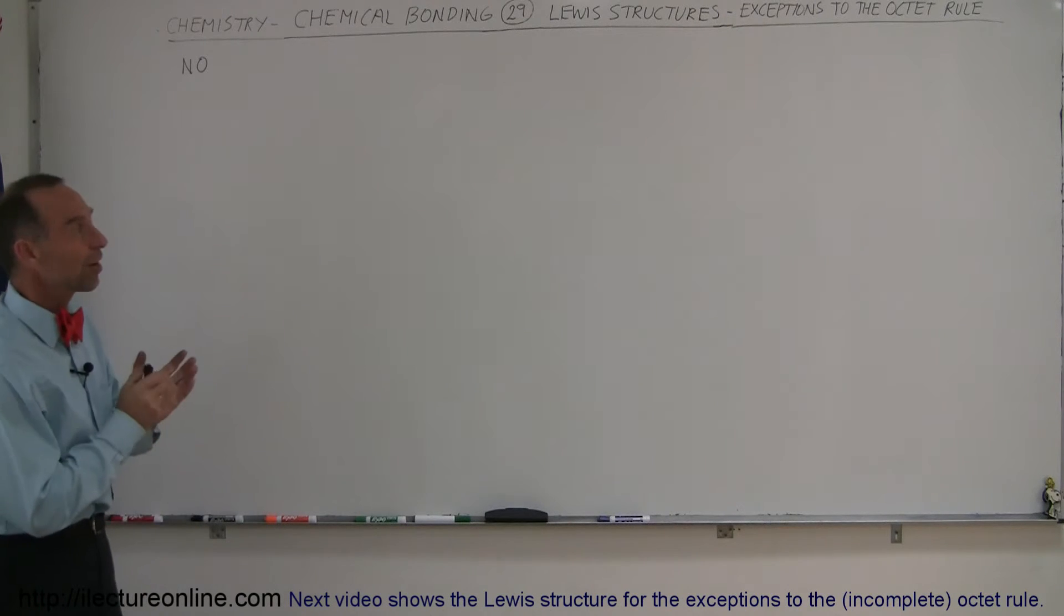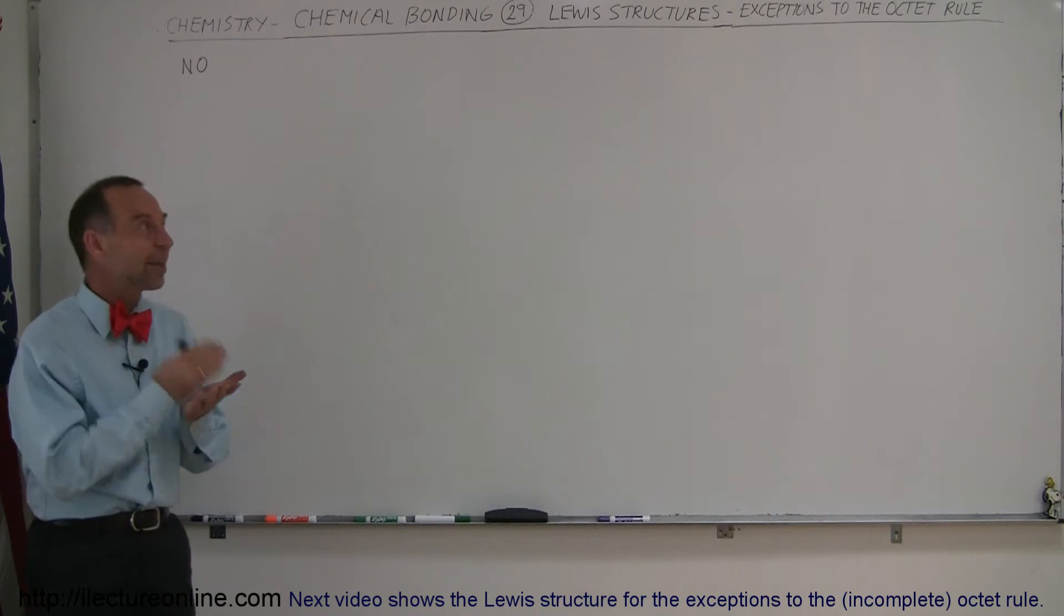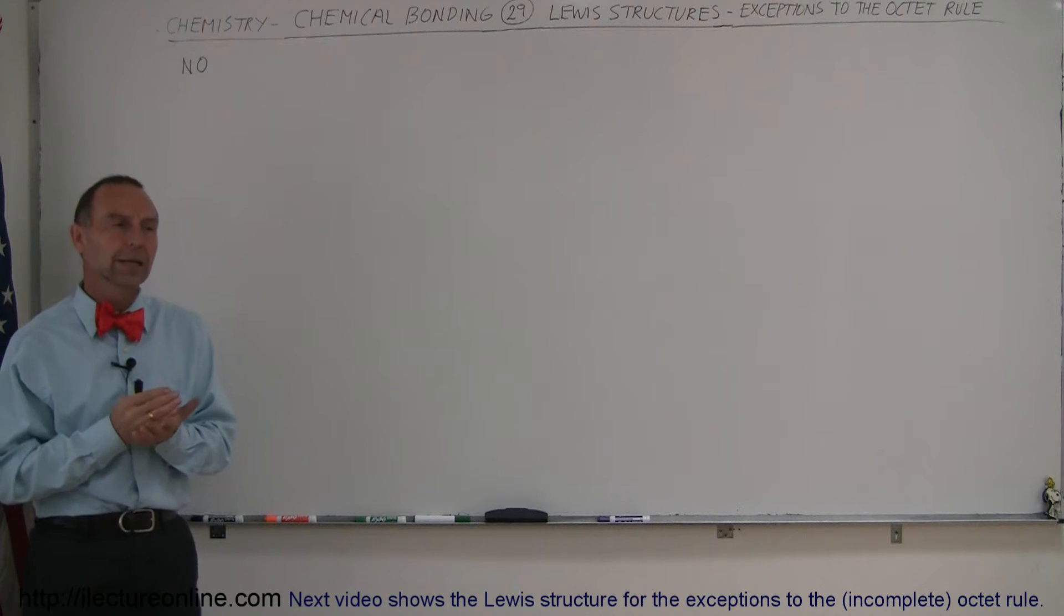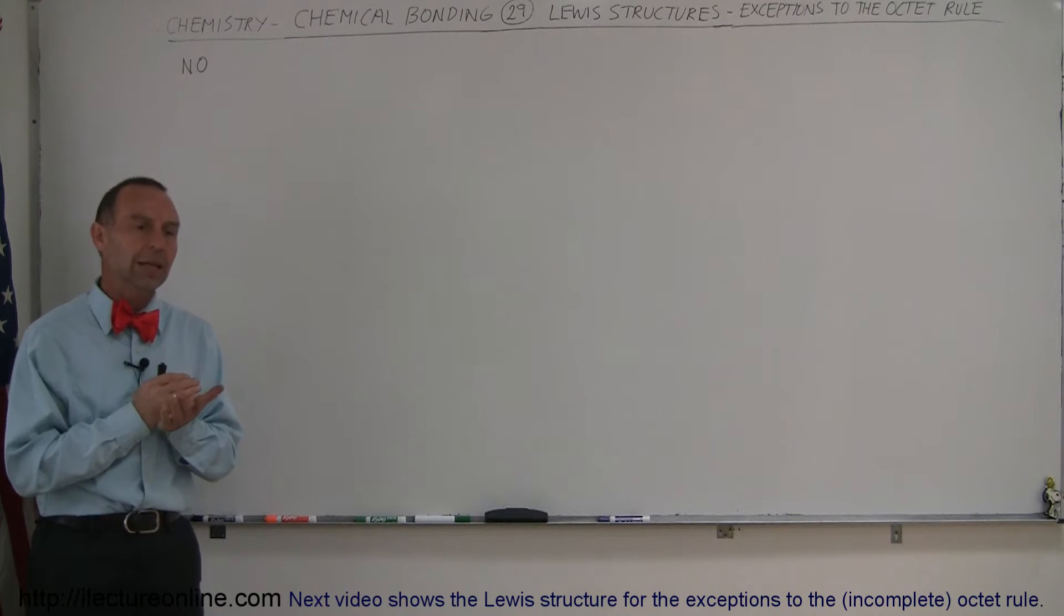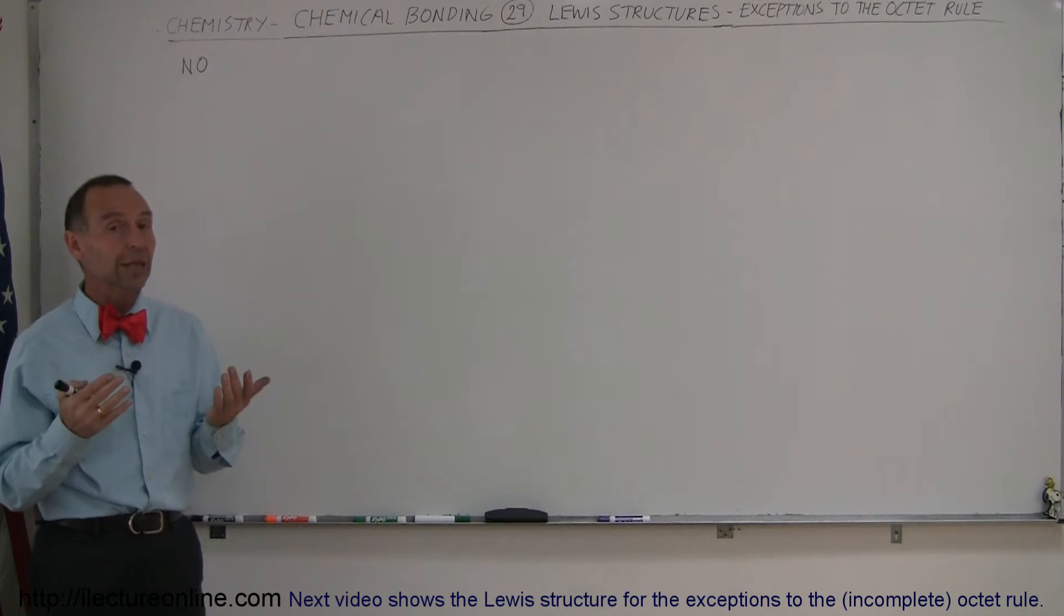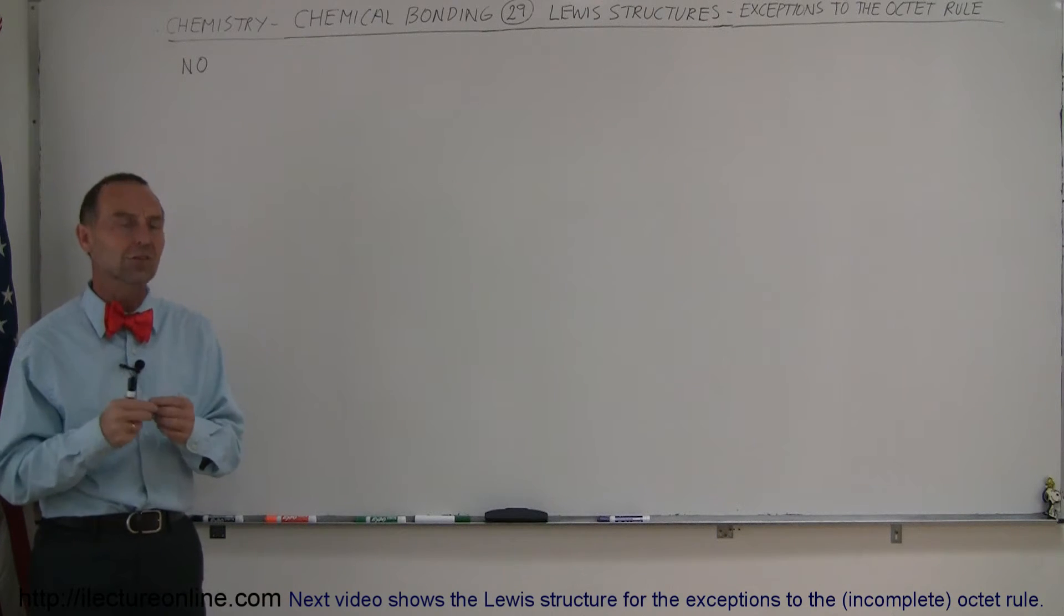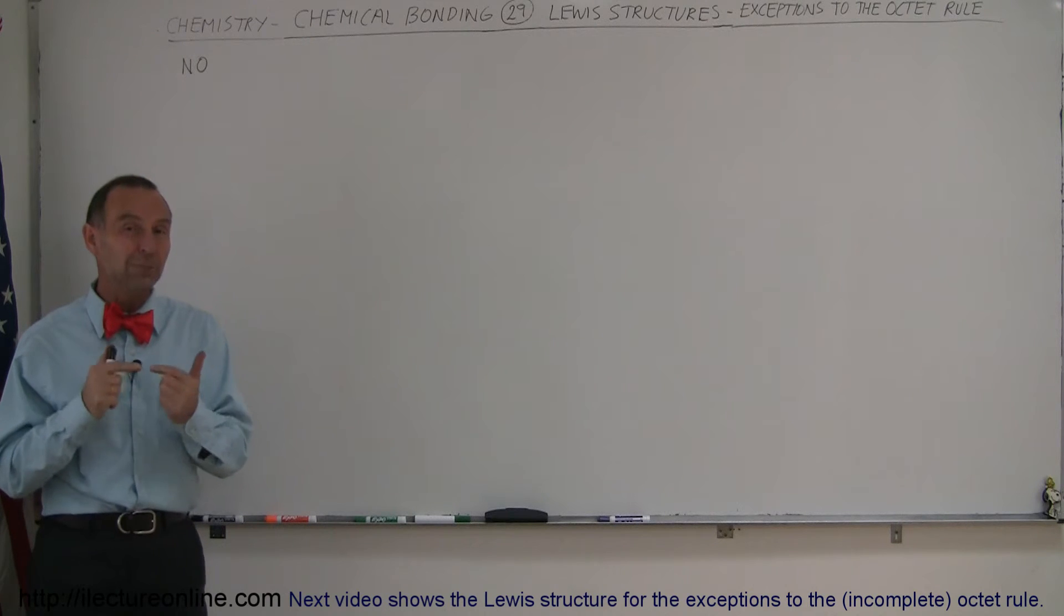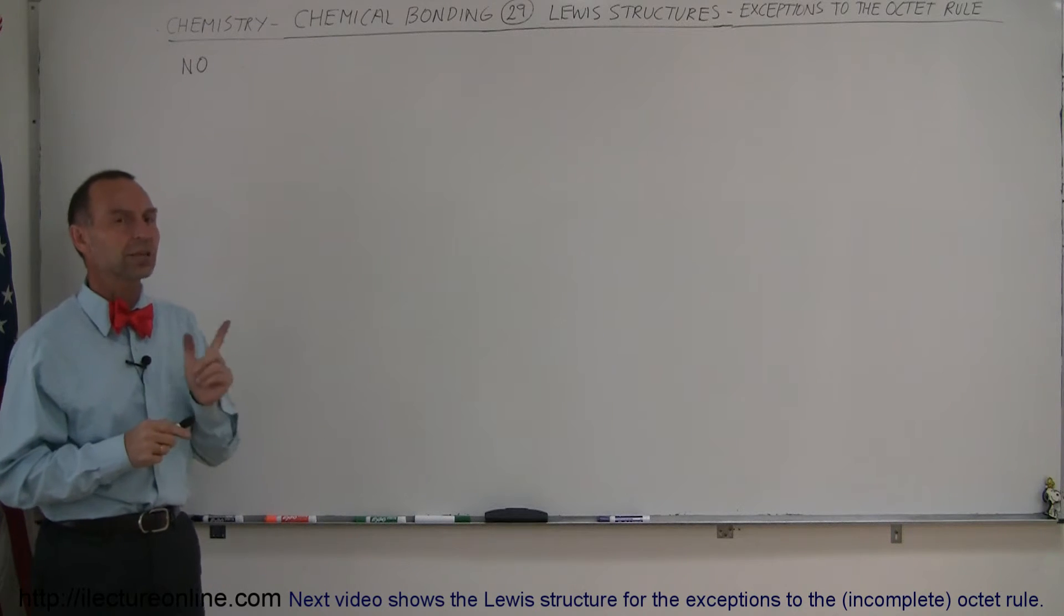Welcome to ElectronLine and here we're going to talk about Lewis structures and exceptions to the octet rule. I've mentioned before that when atoms come from the third or fourth period it's not unusual that there's exceptions to the octet rule, but there's other reasons. Even with some elements from the second period you can have exceptions to the octet rule.